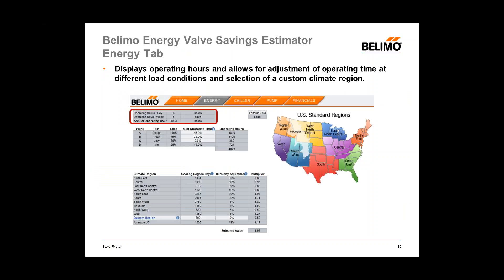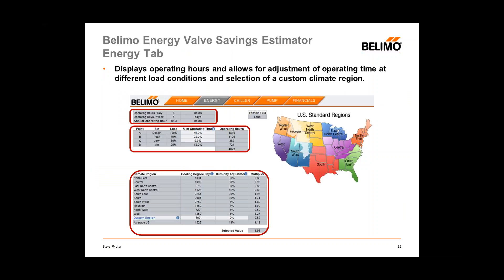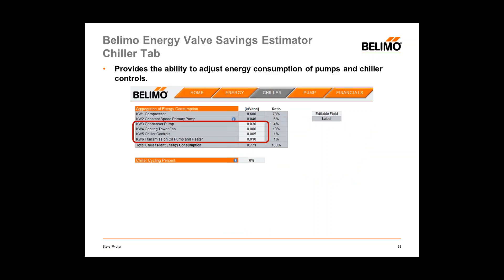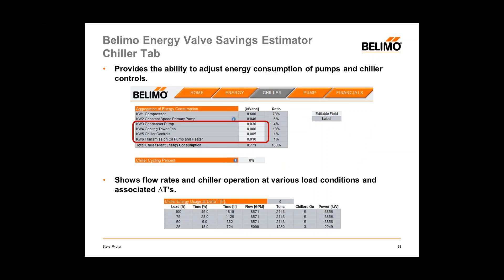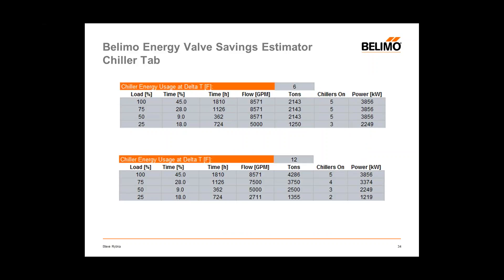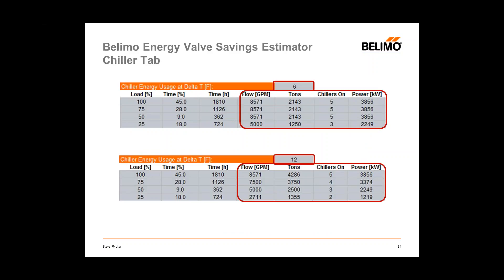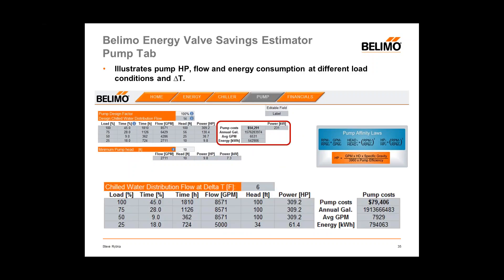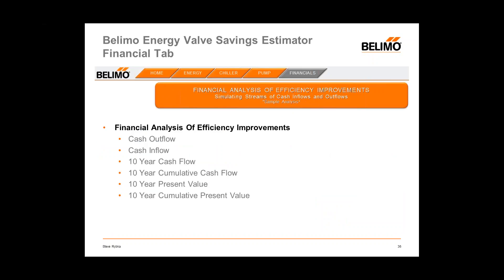The home sheet also provides a financial analysis and a greenhouse gas reduction figure based on decreased energy consumption. The energy tab allows you to adjust operating hours at different load conditions and create a custom climate zone if needed. The chiller tab allows you to adjust the ratio of energy consumption for pumps, fans, and chiller controls, and shows different flow rates and plant energy consumption at different load conditions and delta T's. The pump tab illustrates pump horsepower, flow, and energy consumption at different load conditions and delta T's. Finally, the financial analysis tab provides financial information based on energy efficiency improvements made at the central energy plant by improving the delta T.